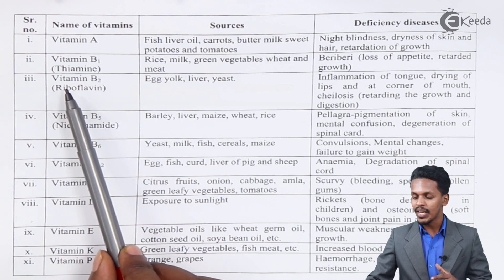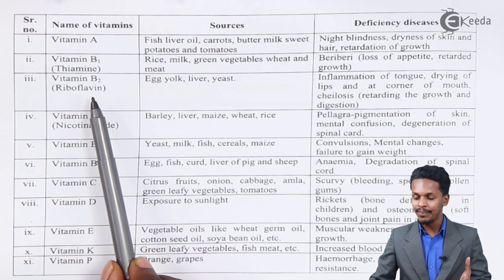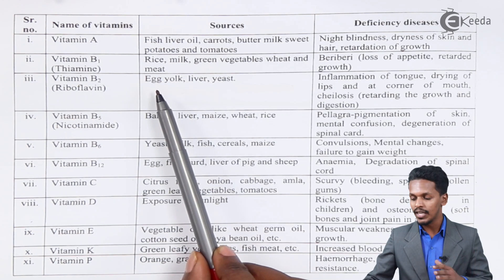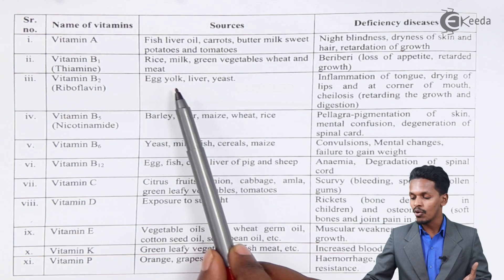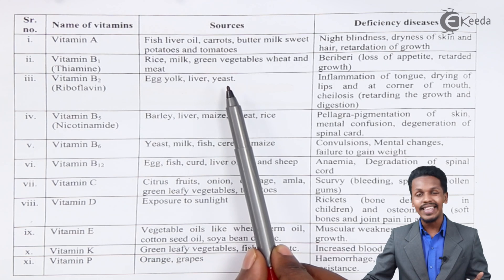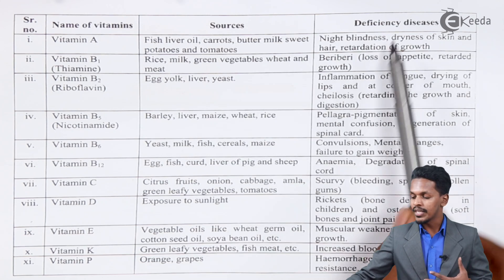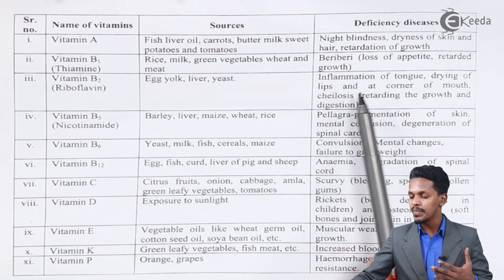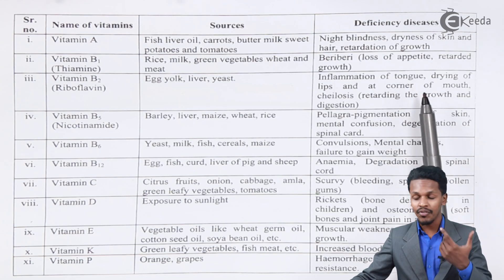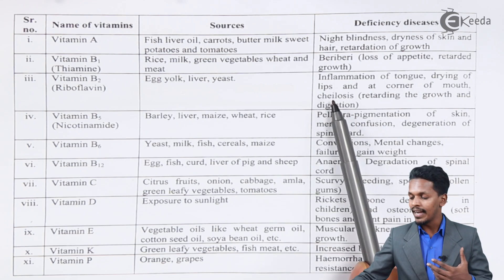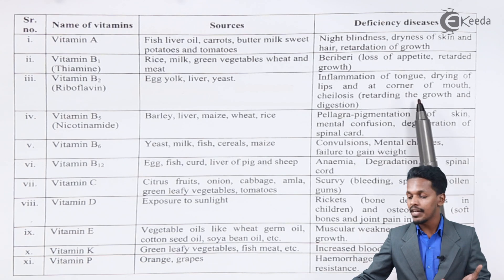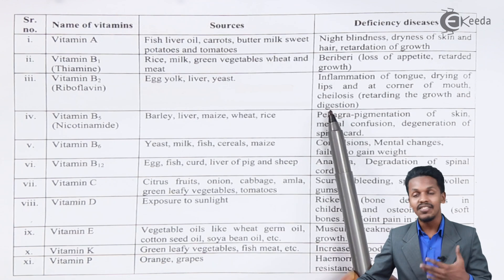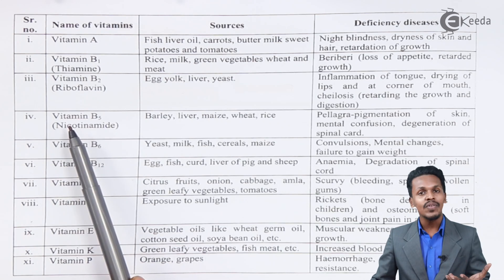The next one is Vitamin B2, known as riboflavin. Riboflavin can be obtained from egg yolk, liver, and yeast. Its deficiency can cause inflammation of the tongue, drying of lips at the corner of the mouth — that is chelosis — and retardation of growth and digestion.